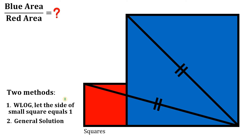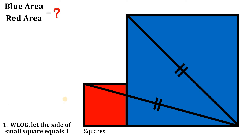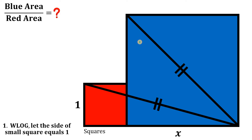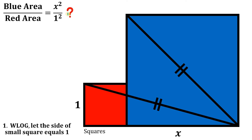Let's do the first method. Without loss of generality, let the side of the small square equal one and the side of the big square equal x. We want the ratio of the blue area over the red area, which is x squared over one squared — that is simply x squared. So we just need to find the value of x squared, and we are done.